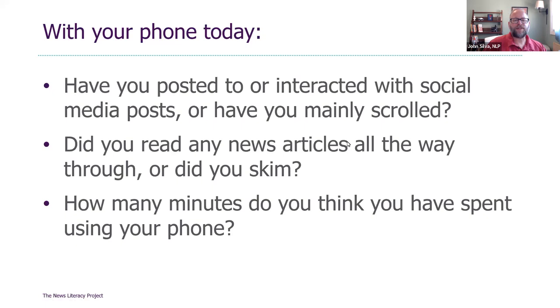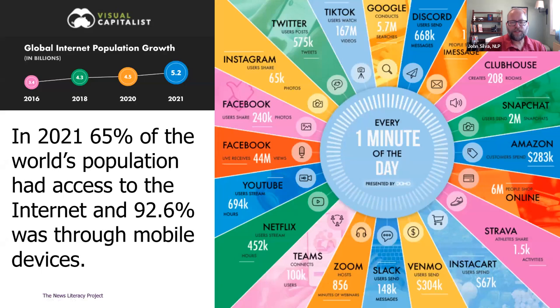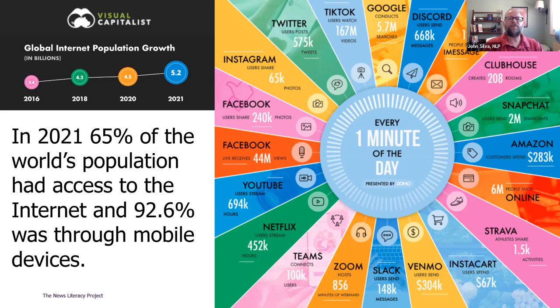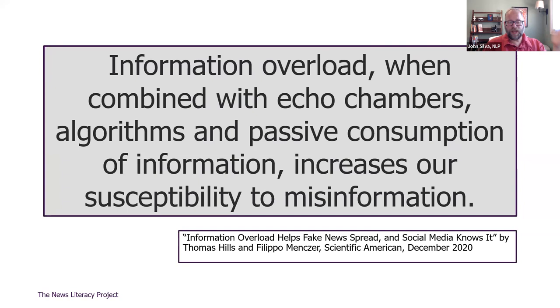This graphic — updated every year for the last several years — is called the Internet Minute. The folks at Visual Capitalists do the research and put this together. It's a snapshot of average traffic for every minute of the day across various platforms. There have been interesting trends — things like Zoom increased significantly with the pandemic, as did e-commerce. Think about how many of these platforms can be used to communicate or share news and information. There is an overwhelming amount of information bombarding us daily, but interestingly, only a fairly small percentage is actually news.